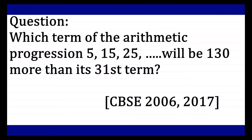Now what is being asked? Which term of the arithmetic progression 5, 15, 25 will be 130 more than its 31st term? In this type of question, we need to first find out the 31st term of the given arithmetic progression. Once we find that, we are going to add 130 to that value, and that resulting value will be our nth term — which is what we need to find out.